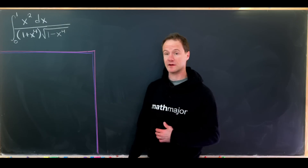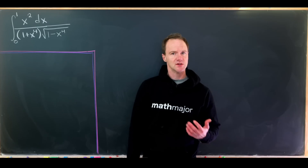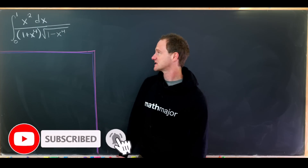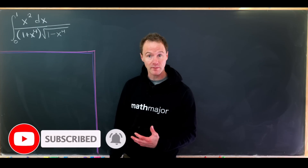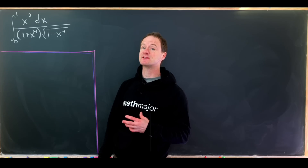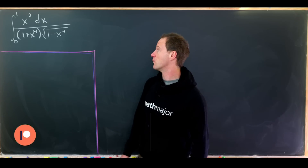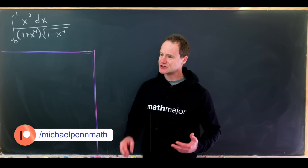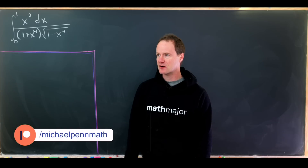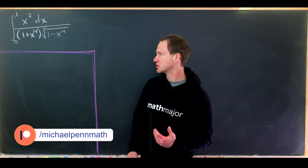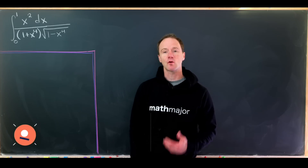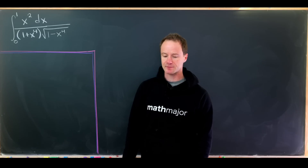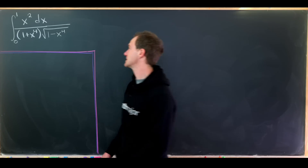Today we're going to look at a pretty gnarly integral. We've got the integral from 0 to 1 of x squared over 1 plus x to the fourth times the square root of 1 minus x to the fourth. We're going to start with a fairly complicated substitution, but in order to motivate that substitution we need to rewrite this thing a little bit.